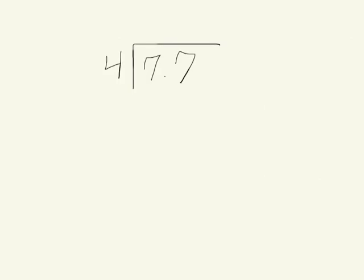I'm going to show just the standard algorithm for this problem. We have 7 and 7 tenths divided by 4. To begin with, 4 goes into our 7 ones one time. When we take those 4 ones away, we end up with 3 ones left.